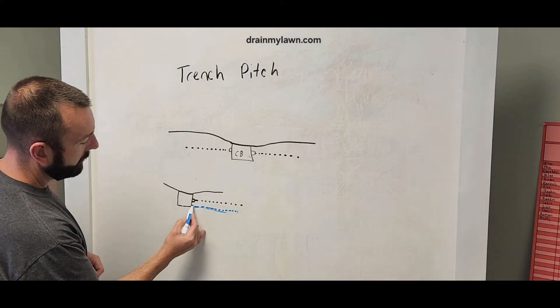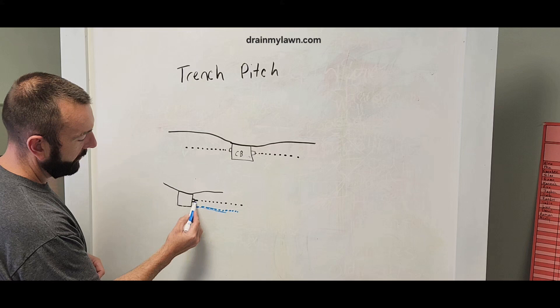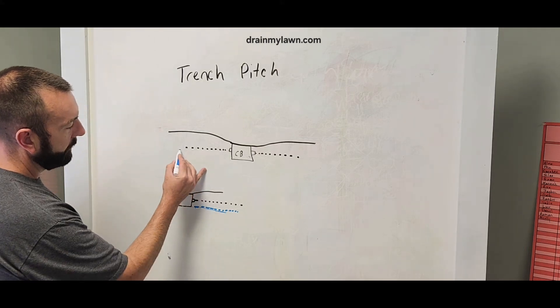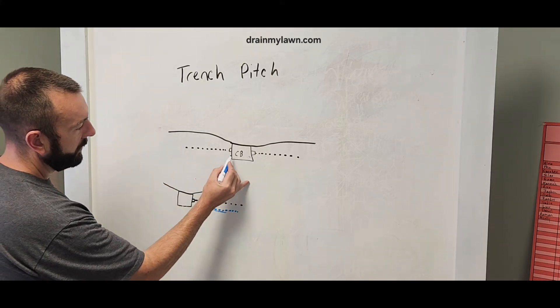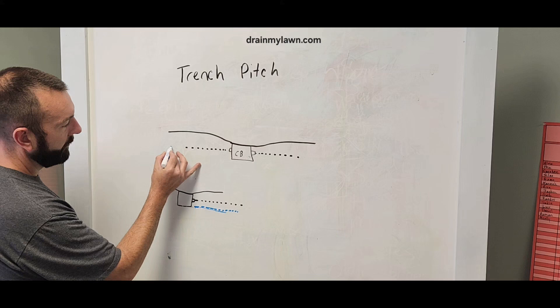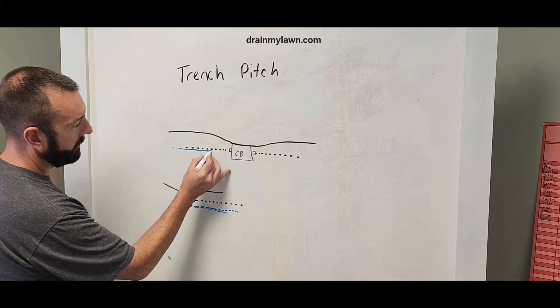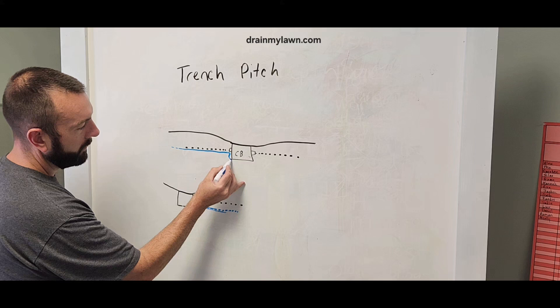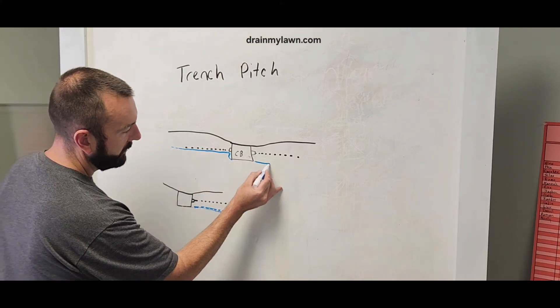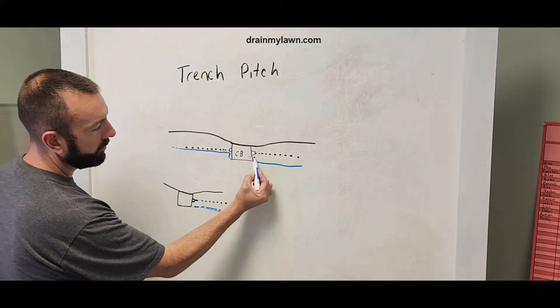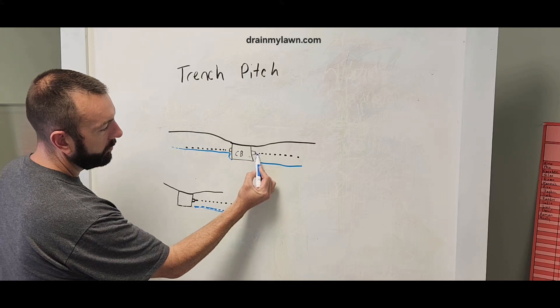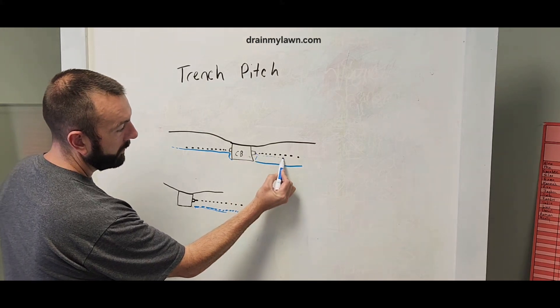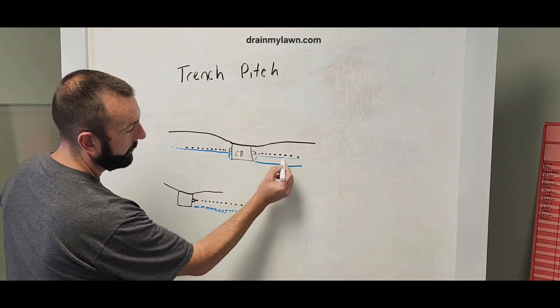You do not need to continue your trench depth like this. If you did this in this situation, let's say you're going around, you have your trench, this is your trench bottom right here. Then, oh, I got to dig out my catch basin. You don't want to continue to dig your trench out that deep. You can bring your trench back up to the pipe level.